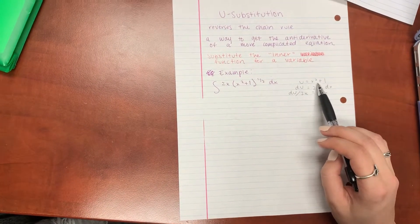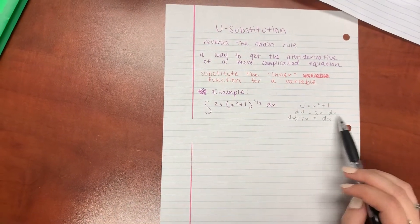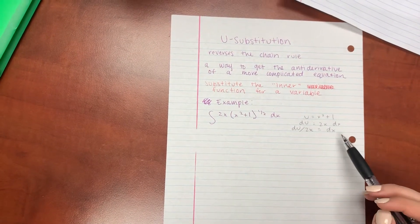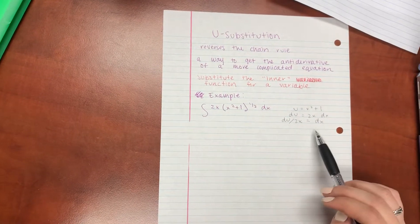And so then you want to take the regular derivative of x squared plus 1, and you just get 2x dx, and then you want to actually solve for dx to isolate dx, so you get du divided by 2x equals dx.